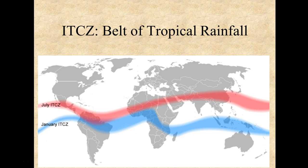This is also an area that is within the tropics, so we're in a belt of tropical rainfall, which is defined by the Intertropical Convergence Zone, or the ITCZ, which we'll talk about more later in the course.